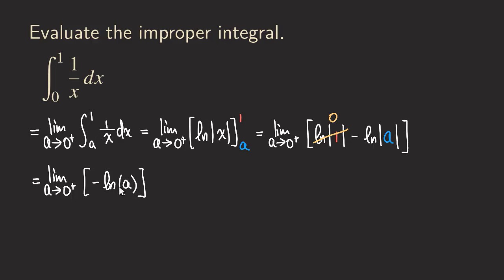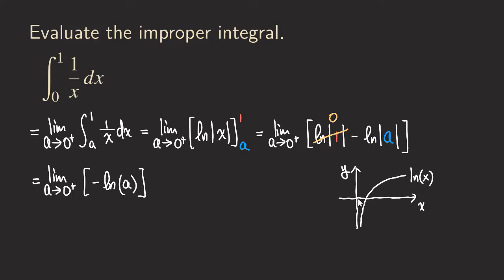Now we want to compute the limit of ln of a as a approaches zero from the right. If we graph the ln function, we can find the answer easily. As a approaches zero from the right, the ln function is approaching negative infinity. So we get negative of negative infinity, which is infinity. Therefore, this integral is divergent.